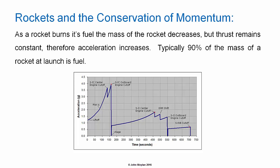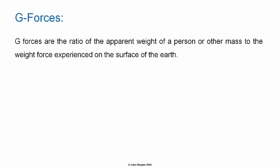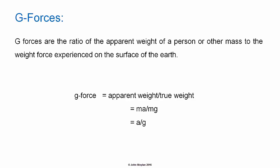As a rocket burns its fuel, the mass of the rocket decreases but thrust remains constant; therefore the acceleration of the rocket increases. Typically 90% of the mass of a rocket is fuel at launch. G forces are the ratio of the apparent weight of a person or other mass to the weight force experienced on the surface of the Earth. G force equals apparent weight over true weight.